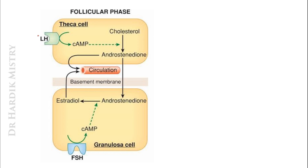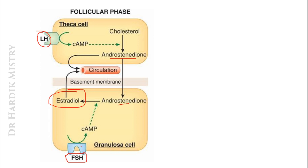Now, how LH and FSH affect theca cells and granulosa cells in the different phases of the ovarian cycle. In the follicular phase (also known as the proliferative phase of the endometrial cycle), under the effect of LH, the theca cell releases androstenedione directly into the circulation. This androstenedione crosses the basement membrane and enters the granulosa cell, where it is converted to estradiol and released into blood circulation. FSH also facilitates the conversion of androstenedione to estradiol.